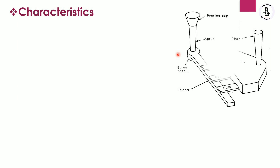This is the general arrangement of the gating systems that will be used in a casting process. Starting with a pouring cup — this pouring cup is used to collect the molten metal. First, the molten metal is poured into a pouring cup or pouring basin, which is connected with the sprue.